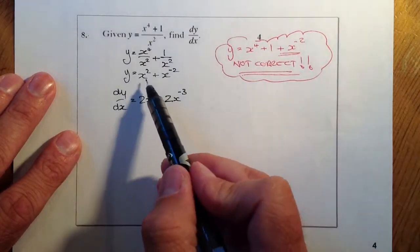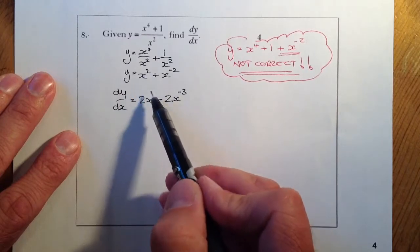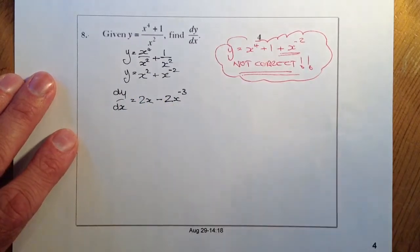Okay, on this side here, all I did was multiply 2 times the 1 that's at the front, gives me the 2. Take the power down by 1, and so that's 2x to the power of 1 basically, minus 2x to the minus 3.